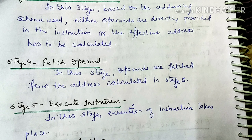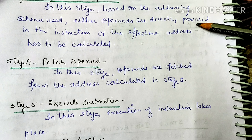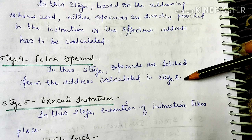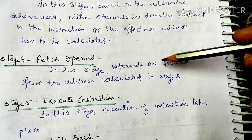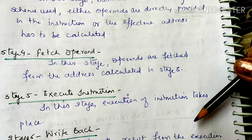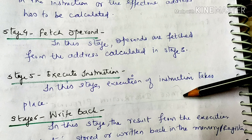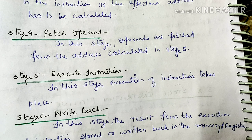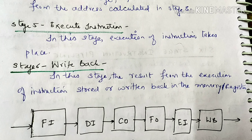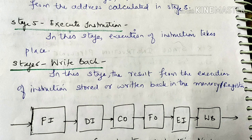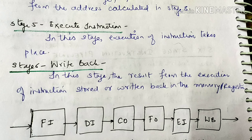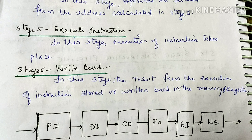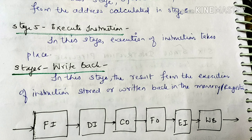Stage 4 — Fetch Operands: operands are fetched from the effective address calculated in stage 3. Operands are fetched with the help of the fetch operand stage. Stage 5 — Execute Instruction: execution of the instruction takes place here. Stage 6 — Write Back: the result from the execution of the instruction is stored or returned back in memory or a register. Whatever result comes after execution will be stored in memory or register in the write back stage.